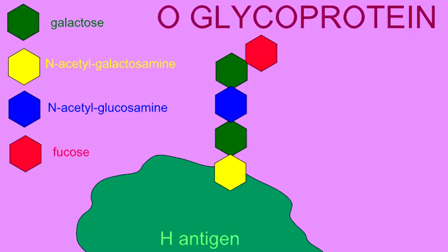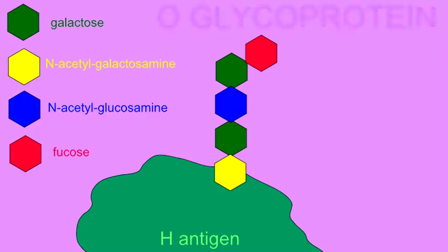If someone has blood type O, this is the end of the process, and this oligosaccharide chain is what blood type O individuals possess.